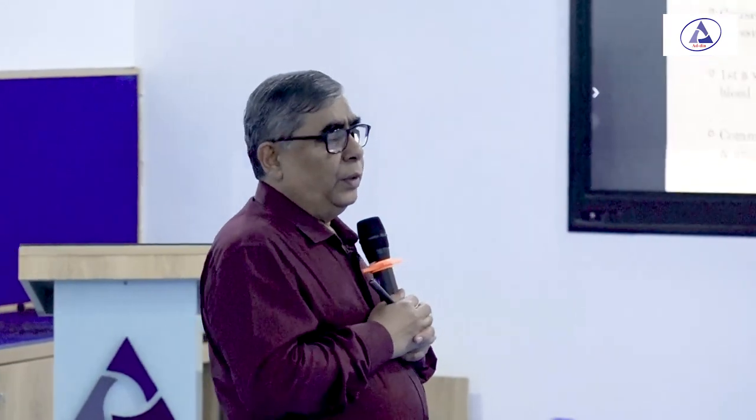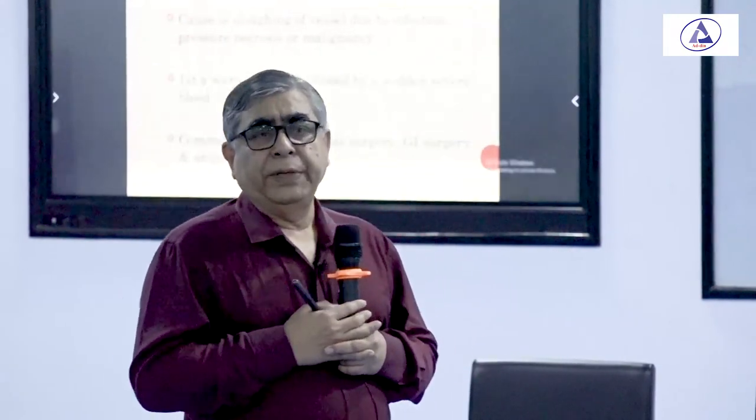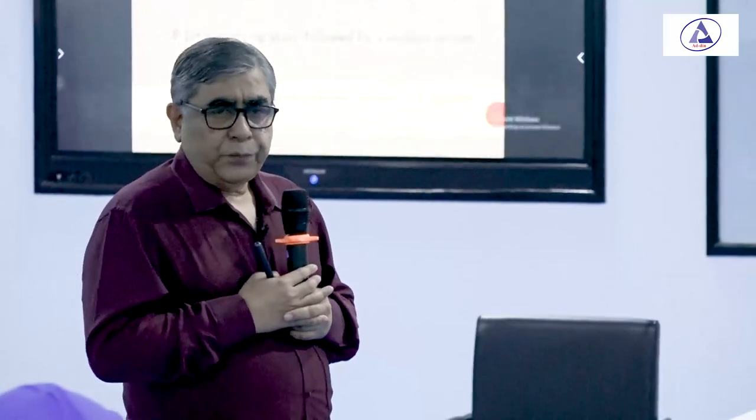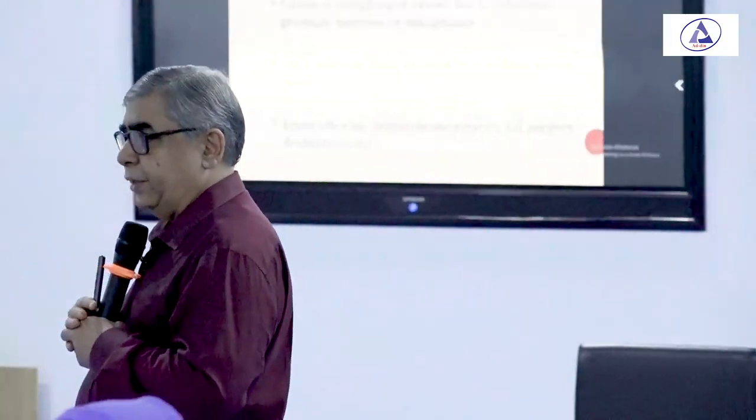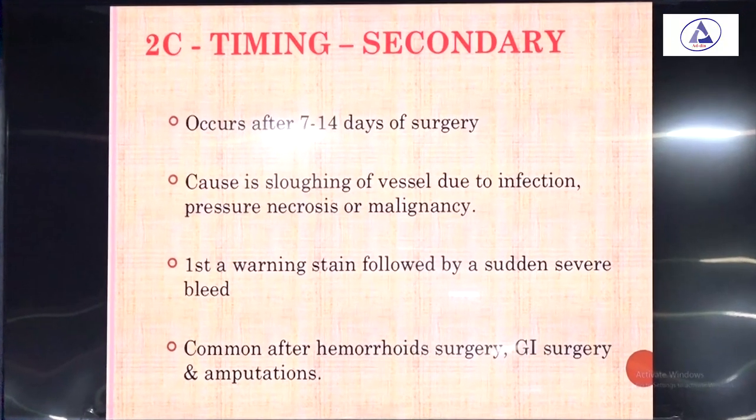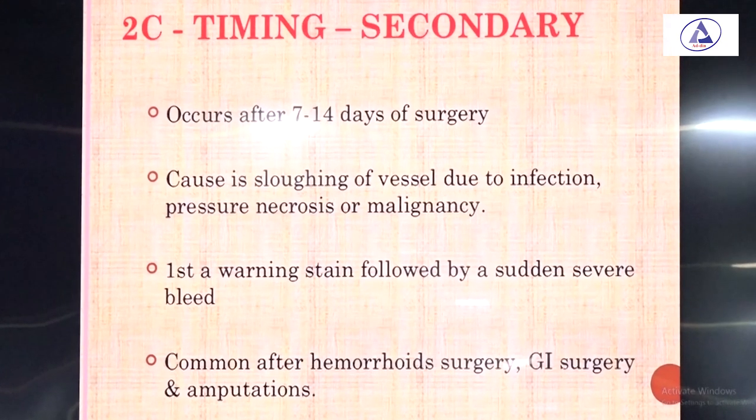What are the factors? The hemorrhage that occurs after 7 to 14 days of primary hemorrhage. Without primary hemorrhage, there is no chance for reactionary or secondary hemorrhage to occur. Always say that it is after primary hemorrhage. The causes are: sloughing of a vessel due to infection, pressure necrosis, or malignancy.